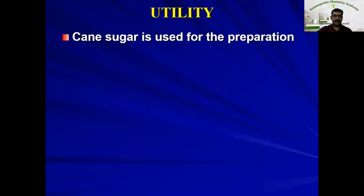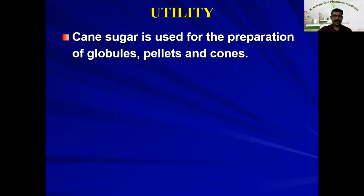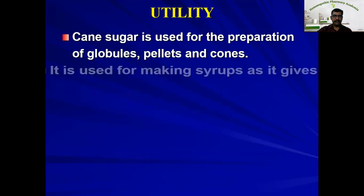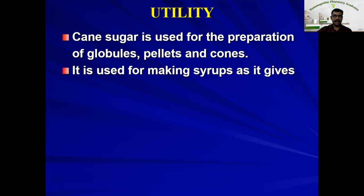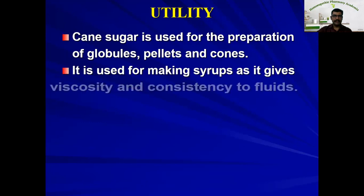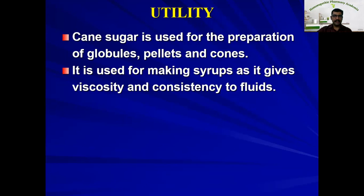Utility: cane sugar is used in the preparation of globules, pellets, and corns. It is used in making syrups, as it gives more viscosity and consistency to fluids.